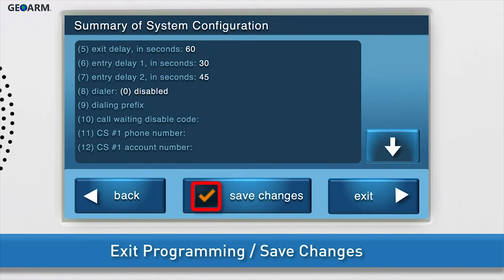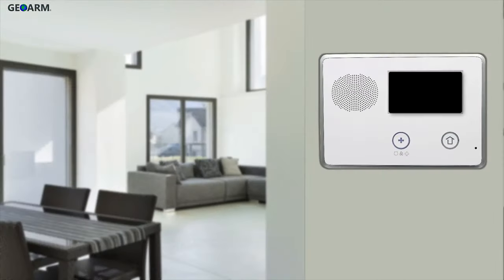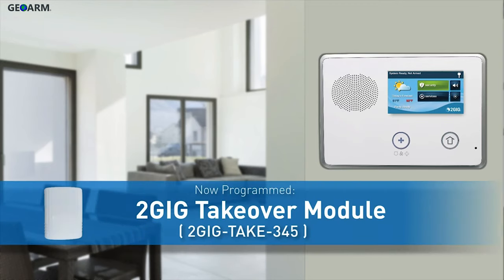The option to save changes is selected by default. Finally, press Exit. The system will automatically save the new information, and the panel will reboot. The 2GIG Takeover module is now programmed into the 2GIG GC2 panel.